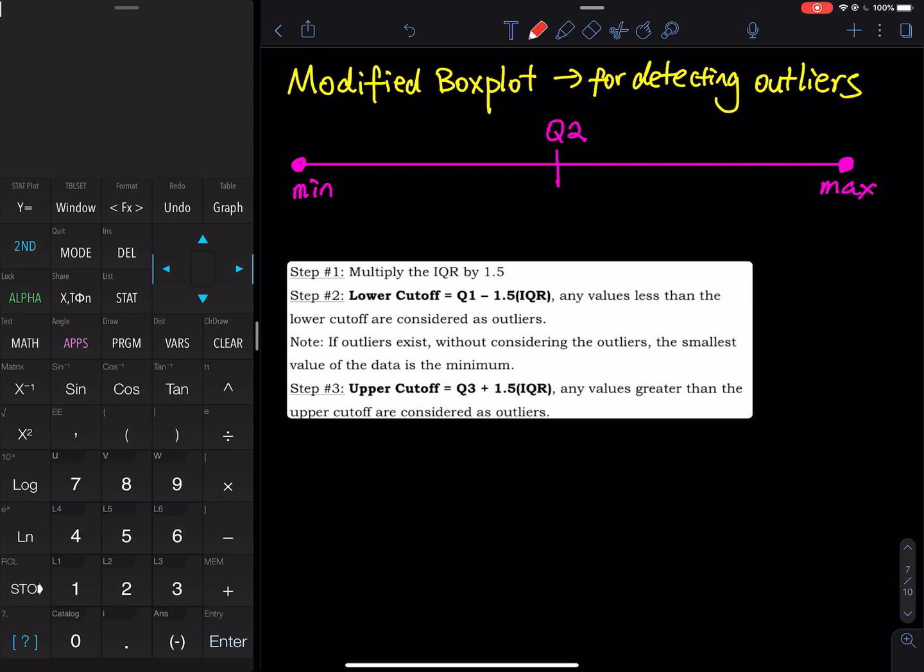But looking unusual is not mathematics. So in order to say they are outliers, you have to prove it. You have to give me some proof.